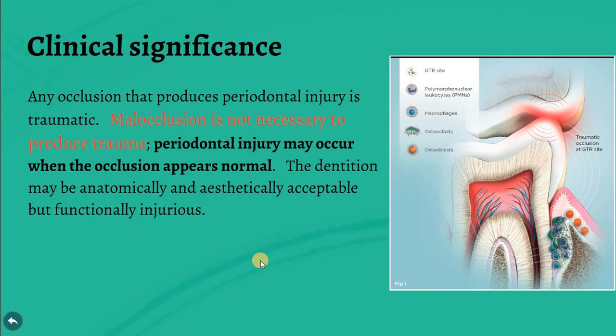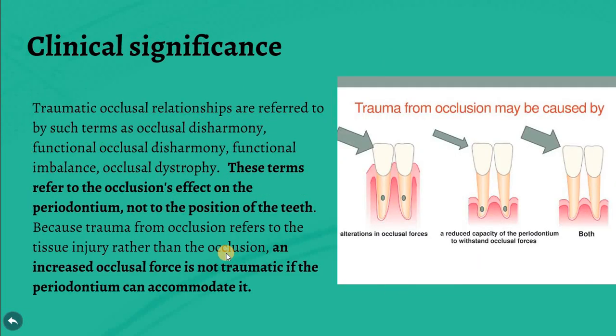Don't judge by appearance. Sometimes teeth are in good occlusion with good aesthetics, but there is injury to the tissue because of a high spot filling or a wrong direction of force that is continuously and chronically affecting the tissue. Traumatic occlusion relationships are referred to by such terms as occlusal disharmony, functional occlusal disharmony, functional imbalance, or occlusal dystrophy. These terms refer to occlusion's effect on the periodontium, not the position of the teeth.